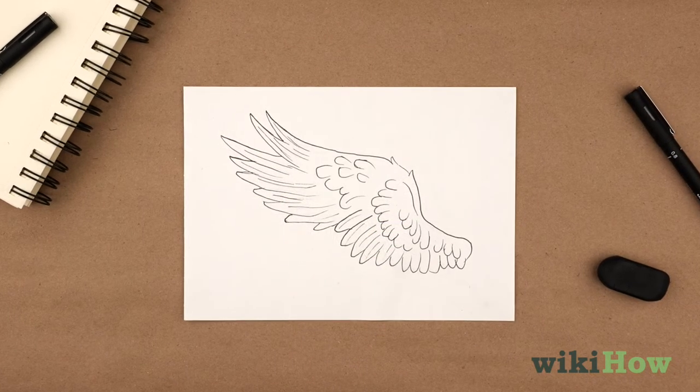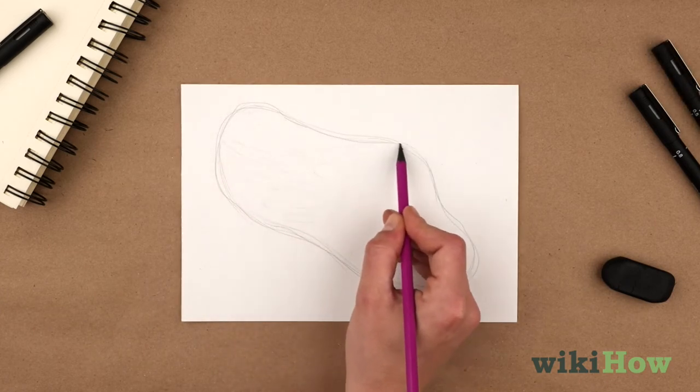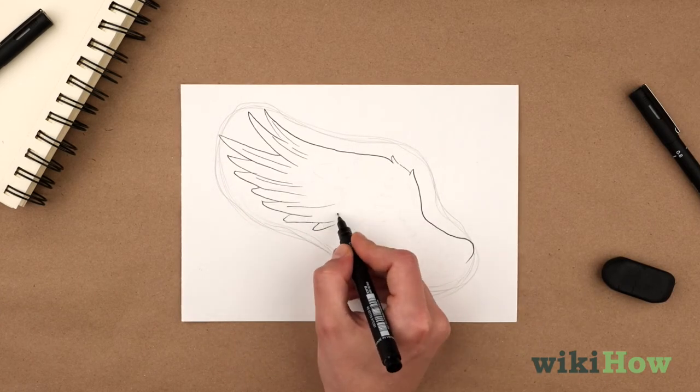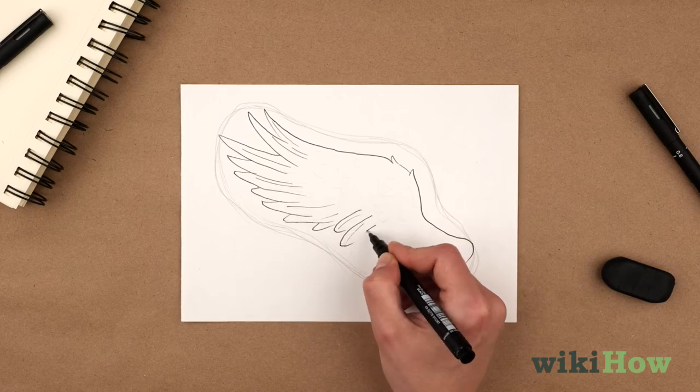You can also make a more cartoony wing by sketching the overall shape of the whole wing, then filling in the shape with feathers and erasing the guidelines when you're done.